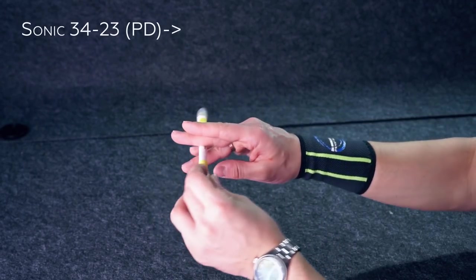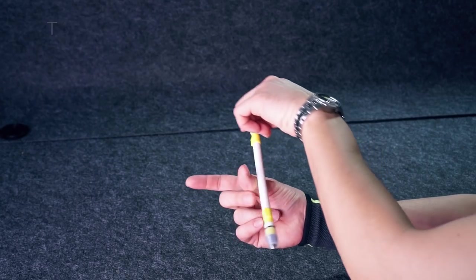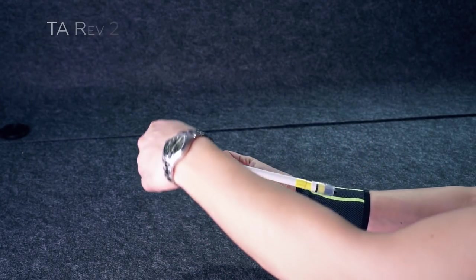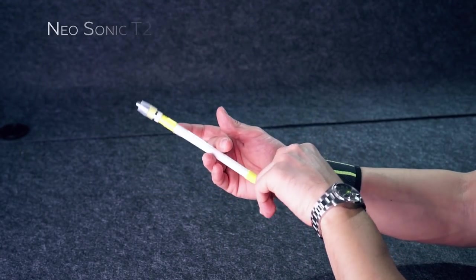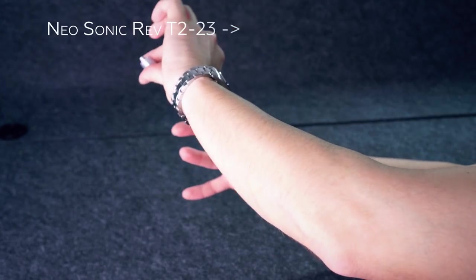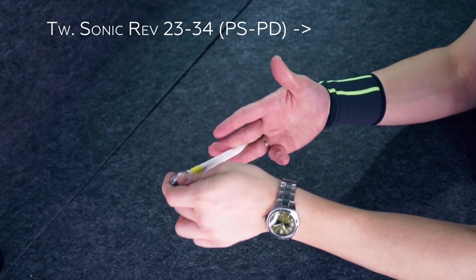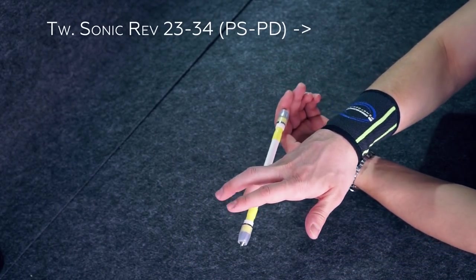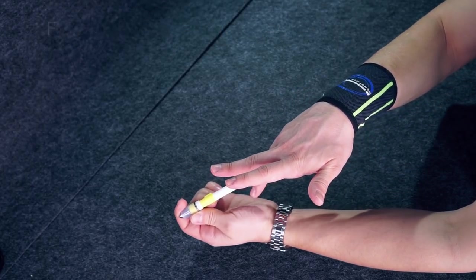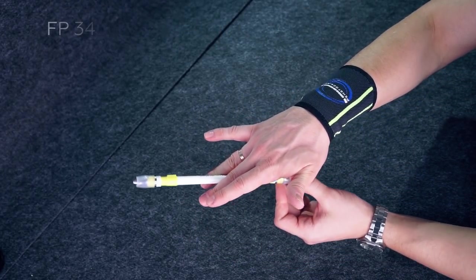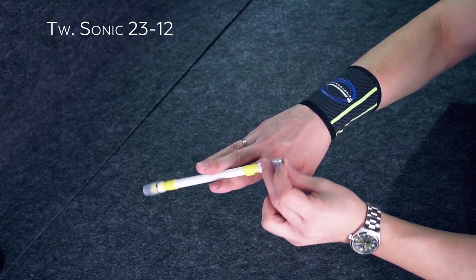Sonic 3-4 to 3 palm down, Thumbaround T2, Thumbaround reverse 2-3, Neosonic T2, Neosonic reverse T2 to 3, Twisted Sonic reverse 2-3, 3-4, palm side to palm down, finger pass 3-4, 4-2-3, Twisted Sonic 2-3-1-2.